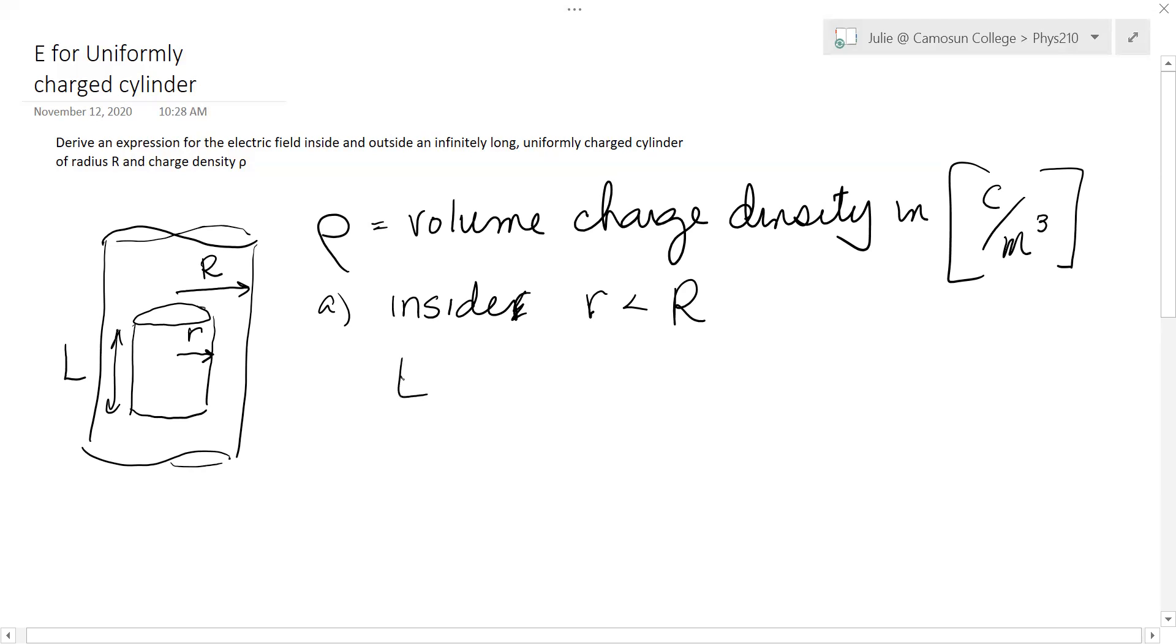So working form of Gauss's law is the electric field is the amount of charge inside our Gaussian surface over the surface area of the Gaussian surface times epsilon naught. So the amount of charge inside here is equal to the charge density times the volume of that Gaussian surface and then the surface area times epsilon naught.